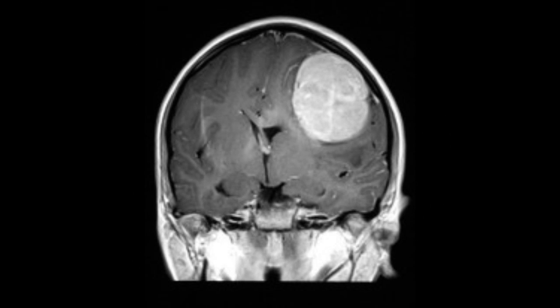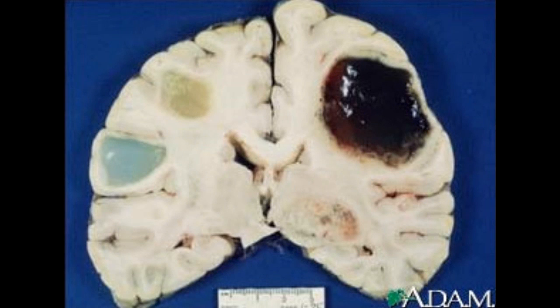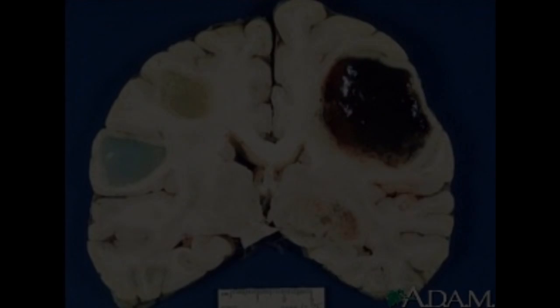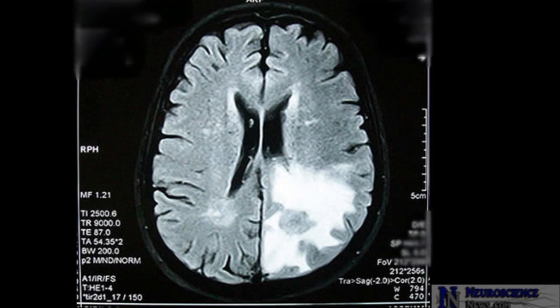Malignant tumors are almost the exact opposite of benign tumors. They grow rapidly and can spread to other parts of the brain or spinal cord. Even if a malignant tumor is completely removed surgically, there is a high chance of it coming back. Malignant tumors are considered high-grade tumors.